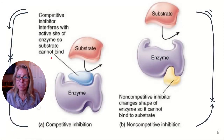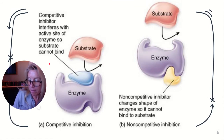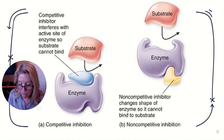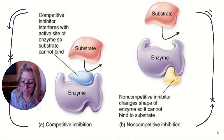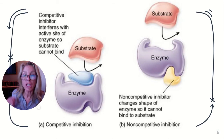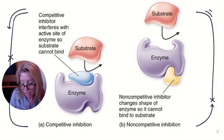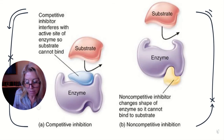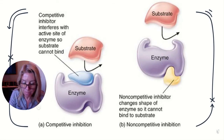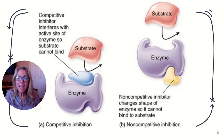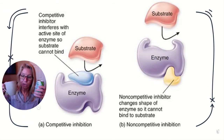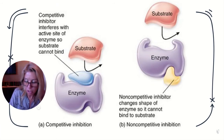For enzyme inhibition: this occurs when a molecule — the inhibitor — binds to the enzyme and decreases its activity. Non-competitive inhibition: the inhibitor binds to the enzyme at a location other than the active site, referred to as the allosteric site (A-L-L-O-S-T-E-R-I-C). Competitive inhibition: both the inhibitor and the substrate compete for the active site.